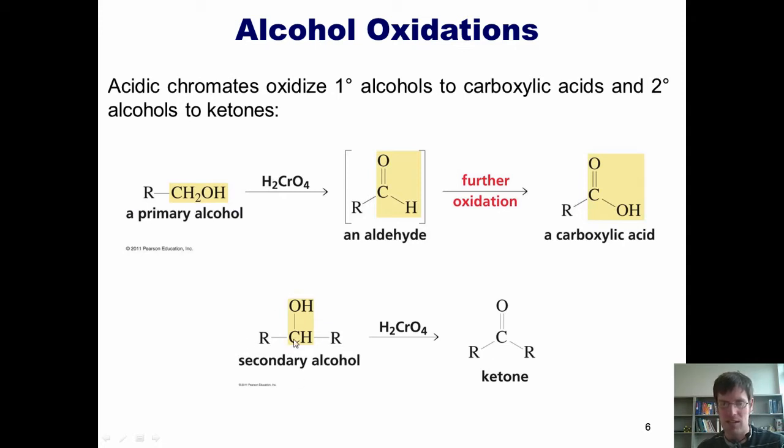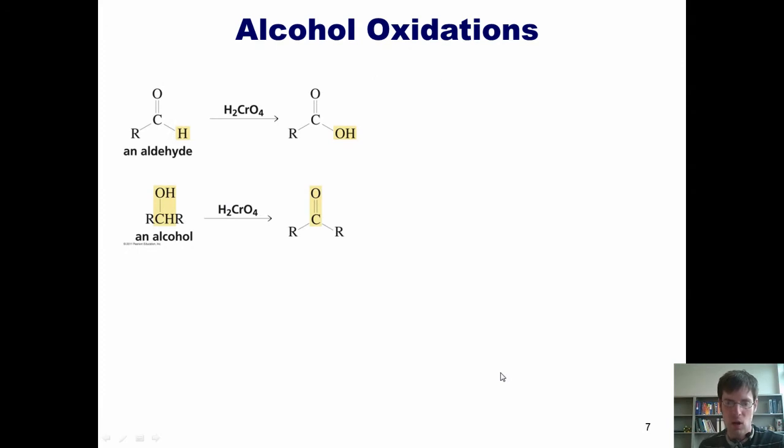They'll also take a secondary alcohol to a ketone. So we can take this and go up one bond to oxygen, thereby furnishing a ketone. Acidic chromates also oxidize aldehydes to carboxylic acids, which should make sense given the picture that I showed you on the previous slide. An aldehyde, once again, is really an intermediate in the chromium oxidation of primary alcohols to carboxylic acids. So once again, acidic chromates only oxidize secondary alcohols to ketones.